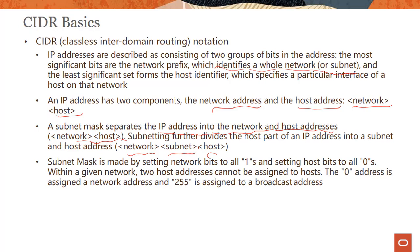A subnet mask is made by setting network bits to all ones and setting the host bits to all zeros. Within a given network, two host addresses cannot be assigned to hosts — the zero address is assigned to the network address, and 255 is assigned to the broadcast address. So 0 and 255 you cannot use, but everything else can be used for hosts within your network or subnet.